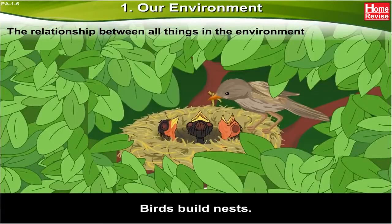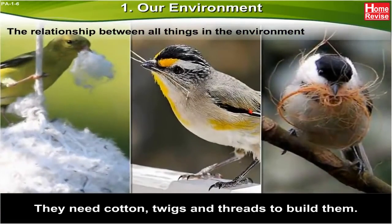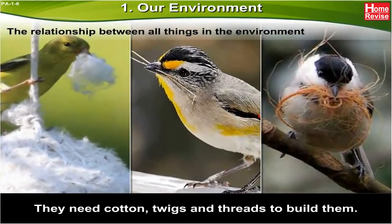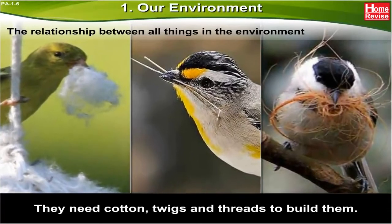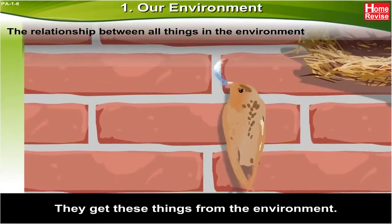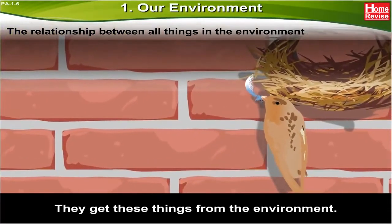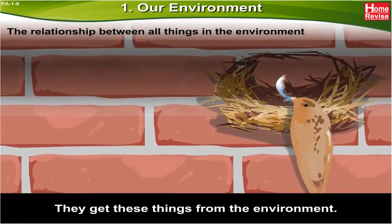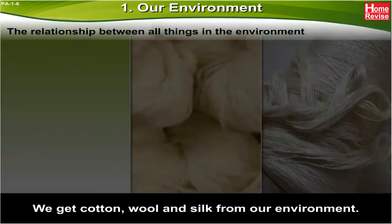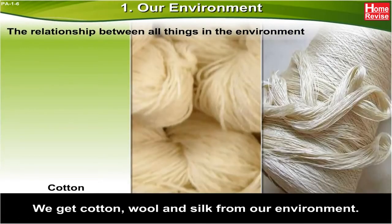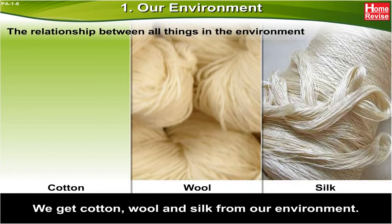Birds build nests. They need cotton, twigs, and threads to build them, and they get these things from the environment. Human beings use so many things from the environment. We get cotton, wool, and silk from our environment.